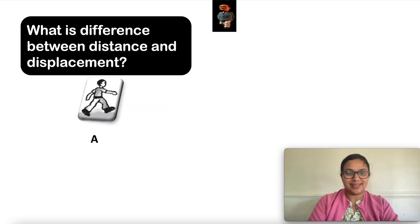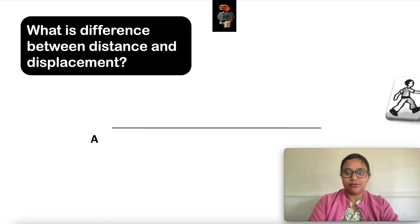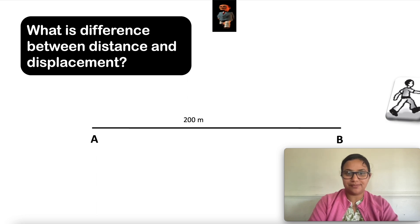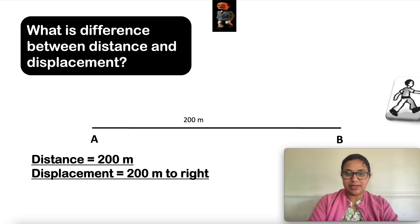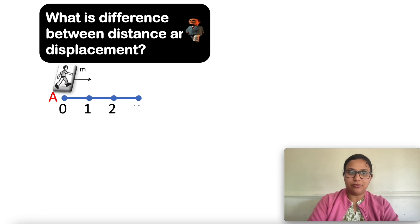Consider another example: an object moves from A to B. The distance traveled is 200 meters. The displacement here is also 200 meters to the right.